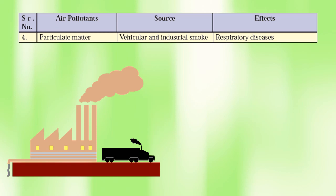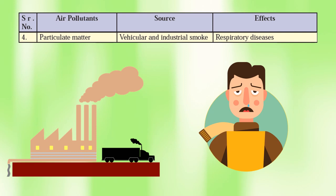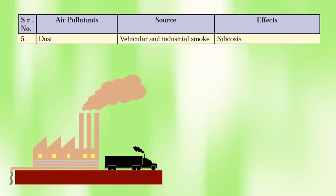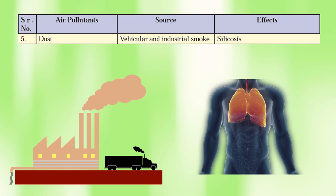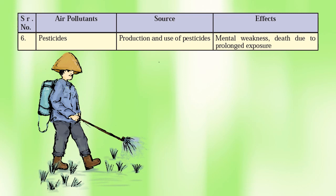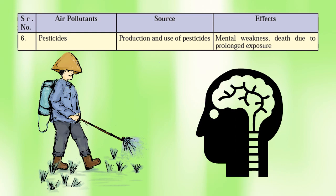Number four, particulate smoke. Source: vehicular and industrial smoke. Effect: respiratory disease. Particulate matter refers to microscopic particles of solid or liquid matter suspended in the air. Number five, dust. Source: vehicular and industrial smoke. Effect: silicosis, which is a lung disease caused by inhaling large amounts of crystalline silica dust. Number six, pesticides. Source: production and use of pesticides. Effects: mental weakness and death due to prolonged exposure.